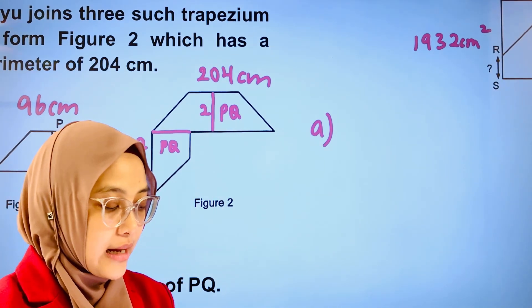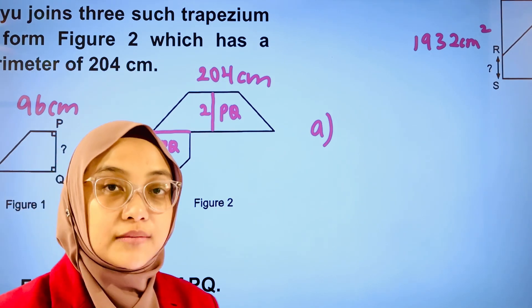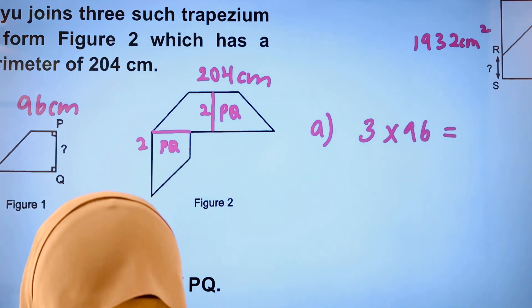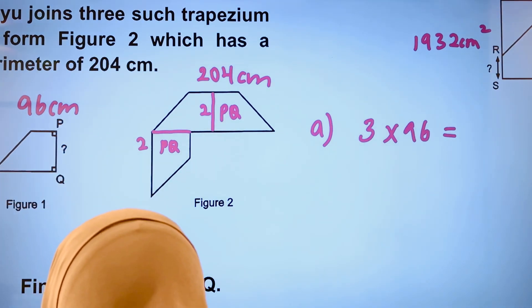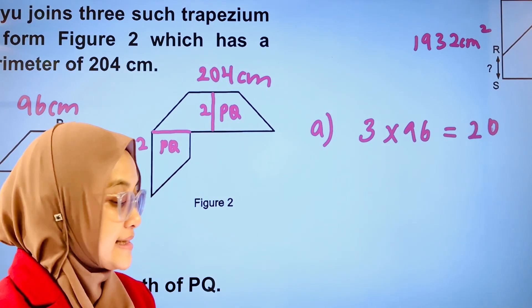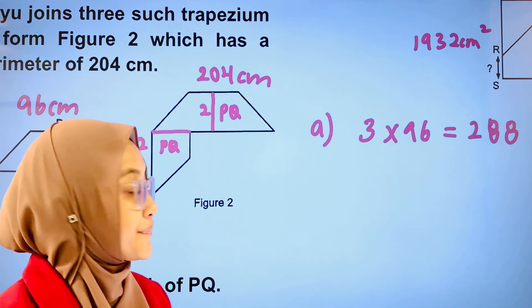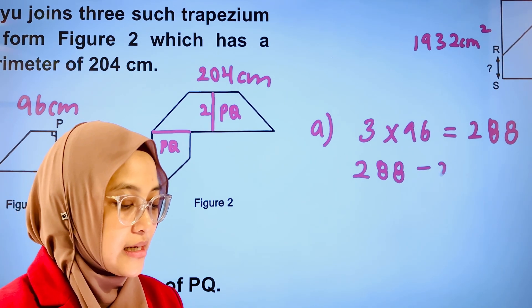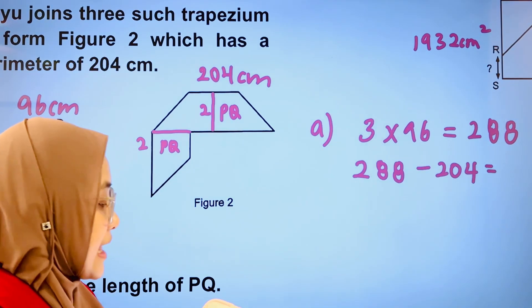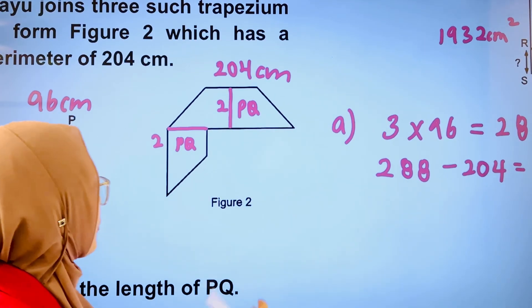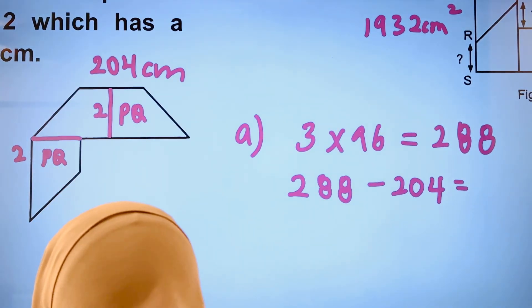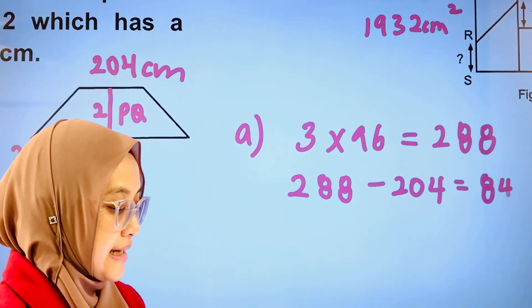For part A, let's find out what is the total perimeter of 3 trapeziums. 3 multiplied by 96, that gives us 288 cm. If I'm going to subtract the 288 cm by 204 cm, that will be the length of the 4 PQs. This is 84.